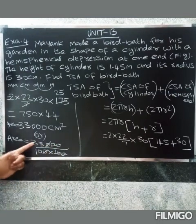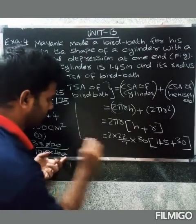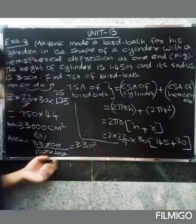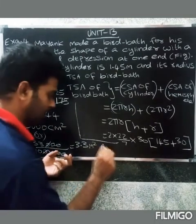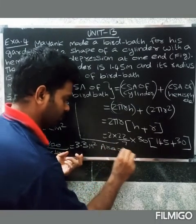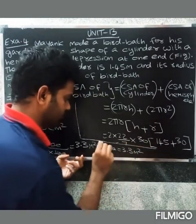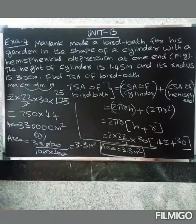33,000 square centimeters - cancel the zeros, 100 × 100. So 33 divided by 10 equals 3.3 meter square. The area equals 3.3 meter square. Thank you.